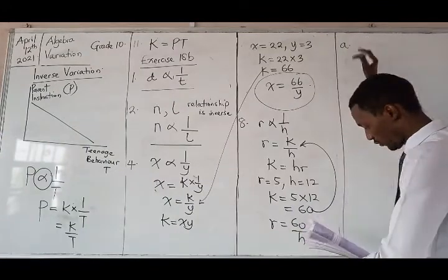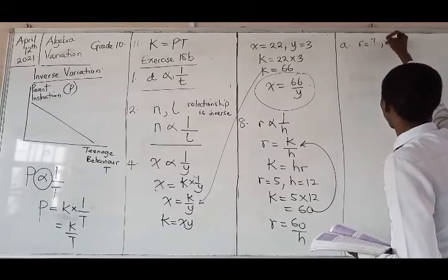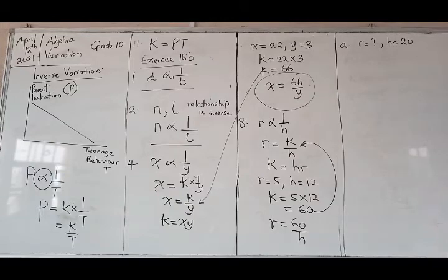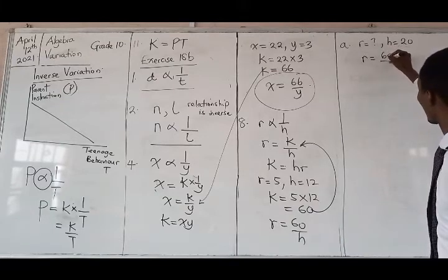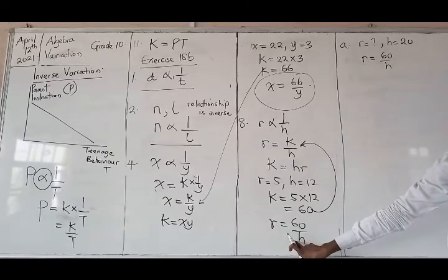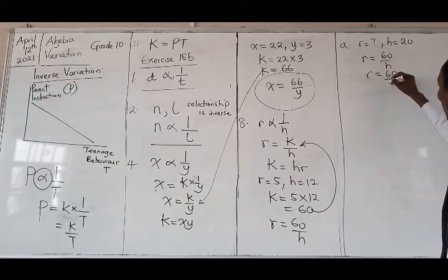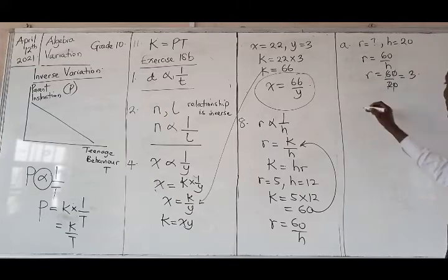To look for question 8A, in B we are told to find R when H is 20. So how do you do that? R is equal to 60 over H. That's the expression you're using. What is H? 20. So R will be equal to 60 over 20, and that will be 3.